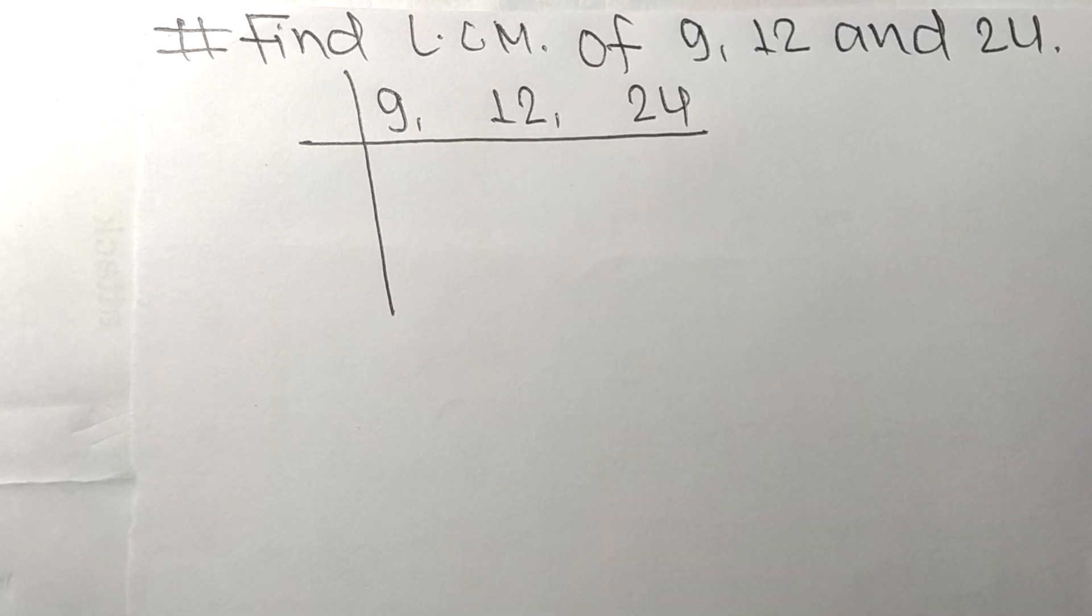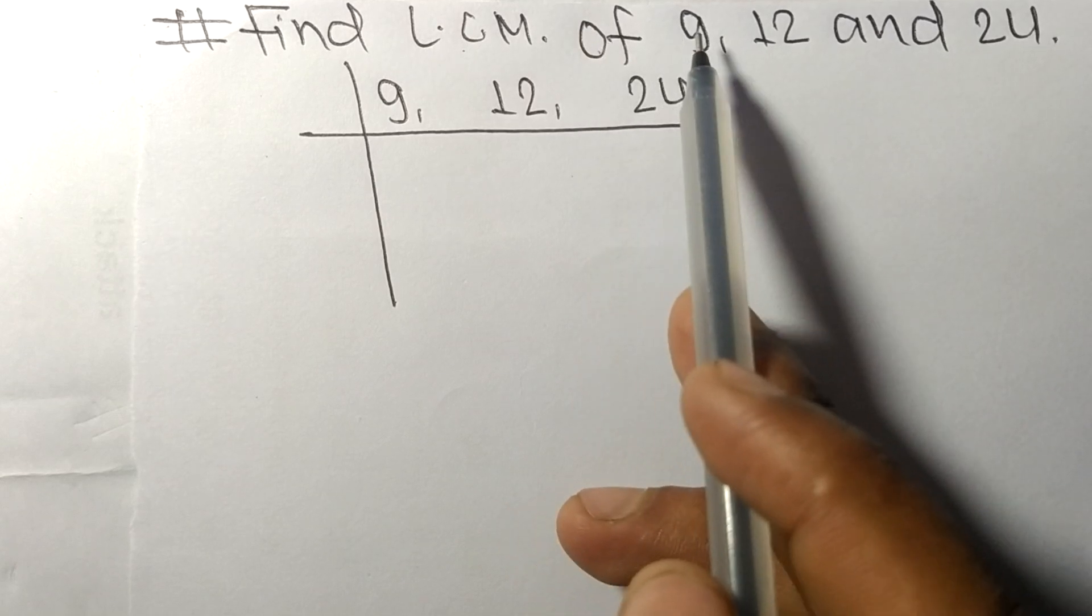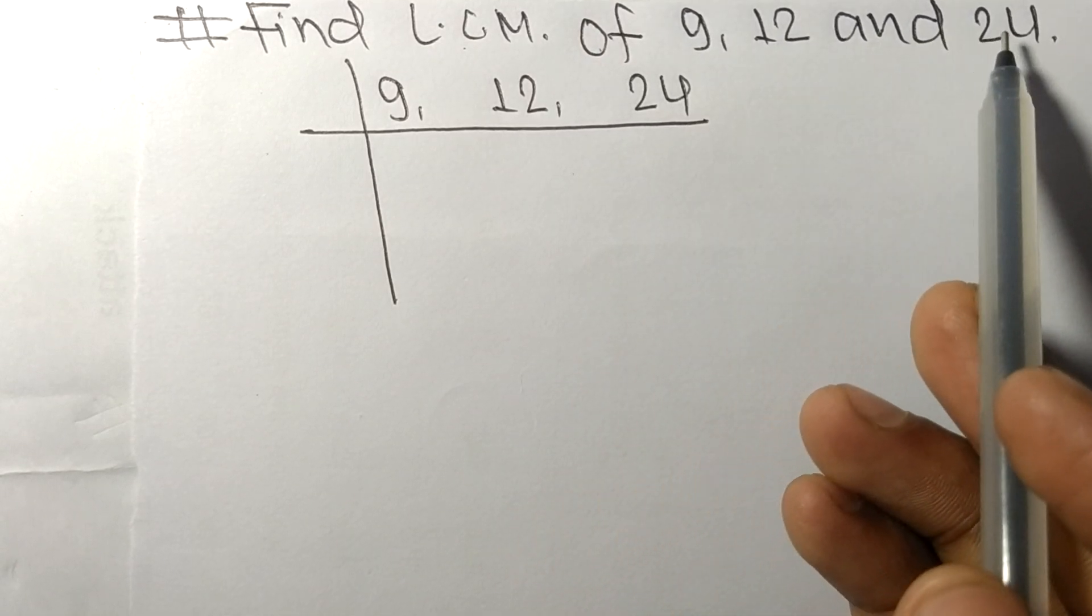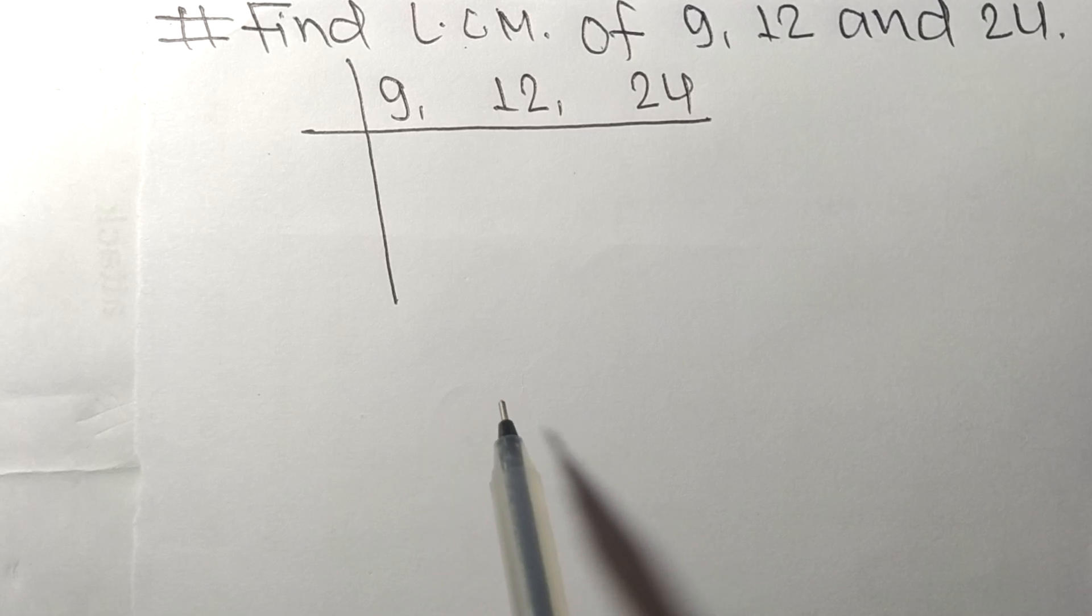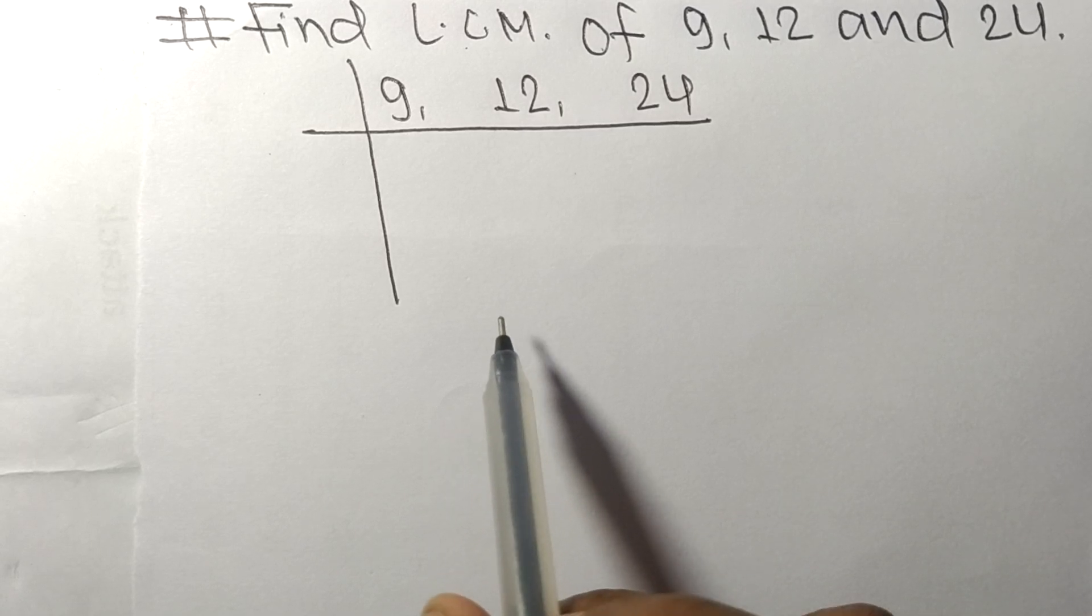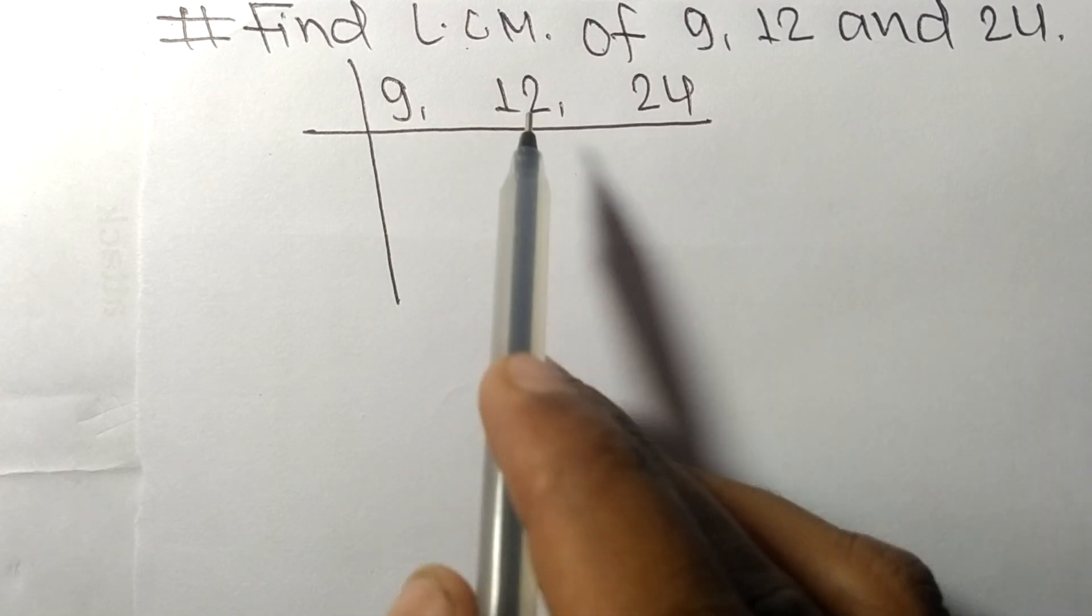Today in this video we shall learn to find the LCM of 9, 12, and 24. To find LCM, we have to choose the lowest number that can exactly divide at least any two of these numbers.